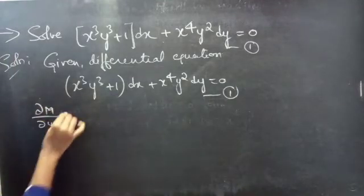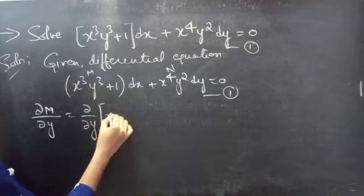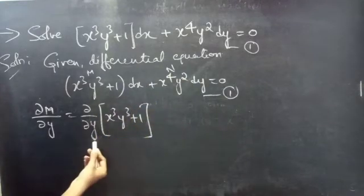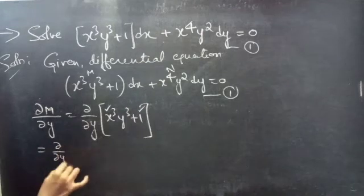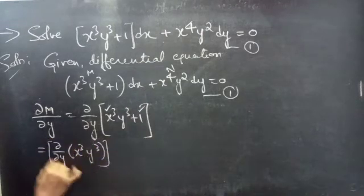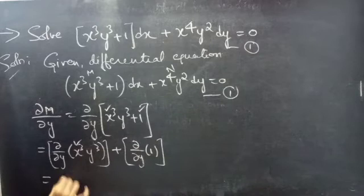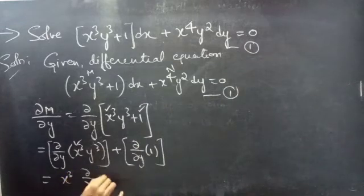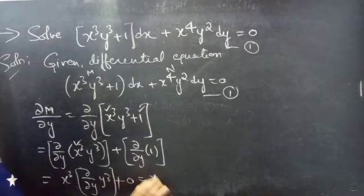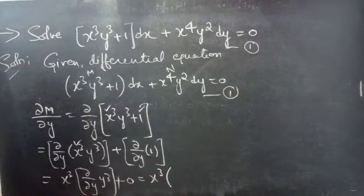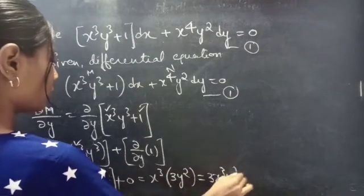∂M/∂y: for M equals x-cubed y-cubed plus 1, since we are doing partial derivative with respect to y, x is treated as constant and 1 is also constant. So ∂M/∂y equals x-cubed times ∂(y-cubed)/∂y equals x-cubed times 3y-squared, which equals 3x-cubed y-squared.